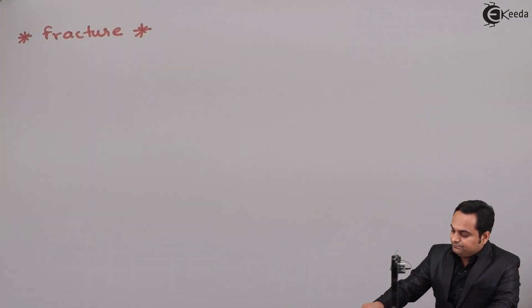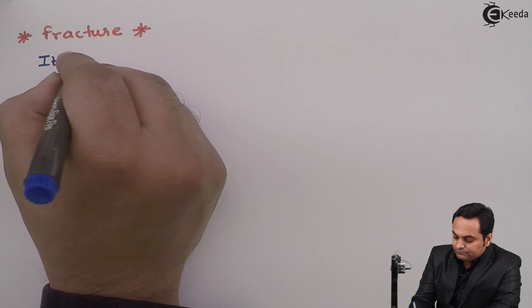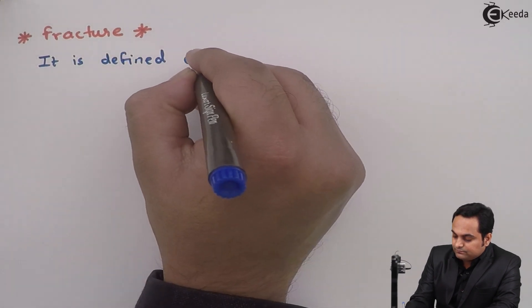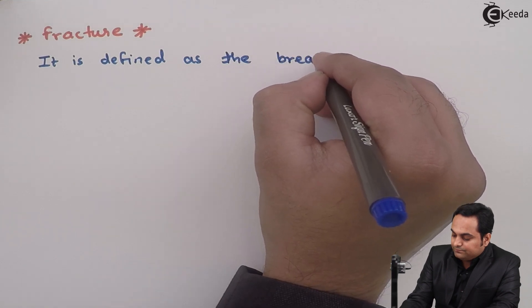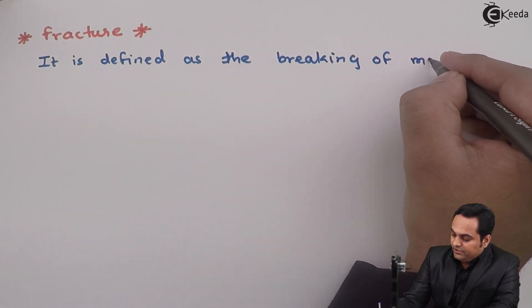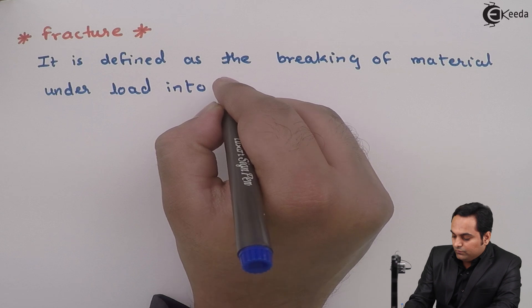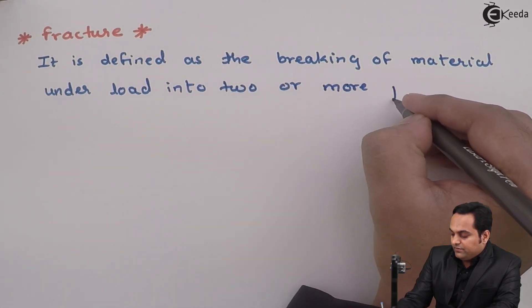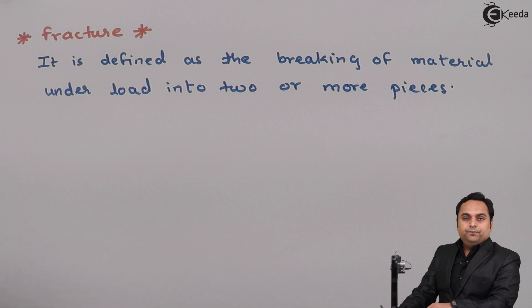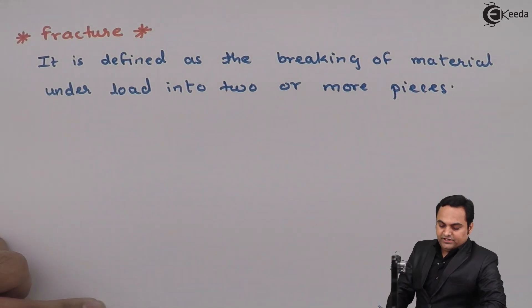Hello friends, in this video we are going to see the definition of fracture and the different modes or types of fracture. Let us get started with the definition part. Fracture is defined as the breaking of a material under load into two or more pieces.